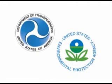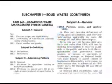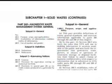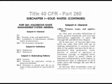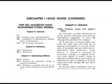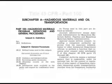The Environmental Protection Agency Resource Conservation and Recovery Act information is found in the Code of Federal Regulations, Title 40, starting with Part 260. The Department of Transportation Hazardous Materials Regulations are found in Title 49 of the Code of Federal Regulations, starting with Part 100.